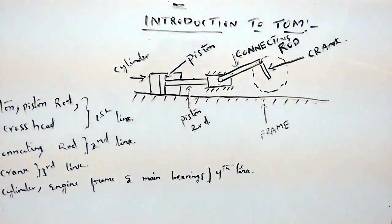We can say a machine consists of a number of parts. If each part of a machine moves relative to some other part, then it is known as a kinematic link.